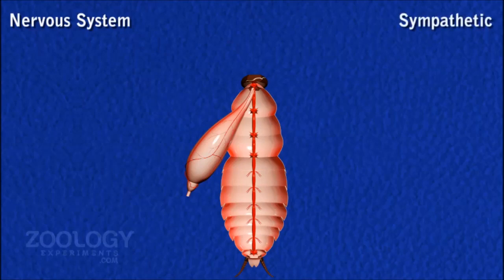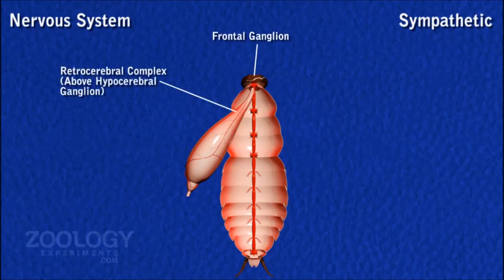Sympathetic Nervous System. The sympathetic nervous system comprises four ganglia and a retrocerebral complex. A frontal ganglion lies above the pharynx in front of the brain. A hypocerebral ganglion is located on the oesophagus. An ingluvial ganglion is located on the crop, and a proventricular ganglion is on the surface of the proventriculus.